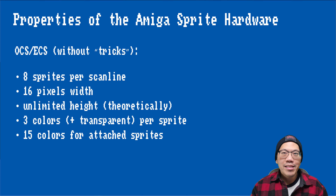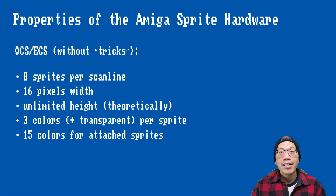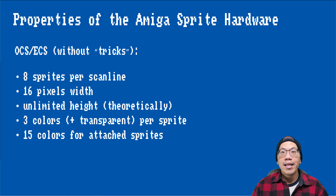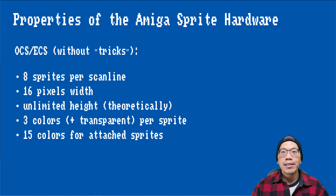Amiga hardware sprites have the properties as shown here. It is possible to display up to eight sprites per scanline. Each sprite can be 16 pixels wide and theoretically of any height. Each sprite can have three colors or up to 15 colors if you attach two of them.